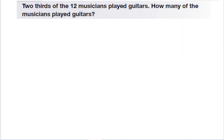So here I have a problem: two-thirds of the twelve musicians played guitars. How many of the musicians played guitars? This is a two-step problem. The first thing I need to do is draw a diagram to see what this looks like. When I draw a diagram, I start by making a long rectangle. At the top, I put the total. In this case, it's twelve musicians.